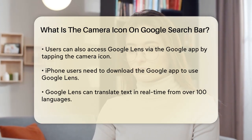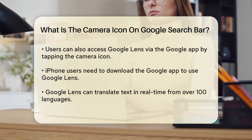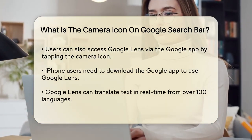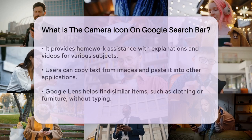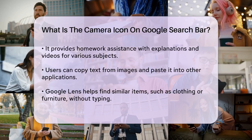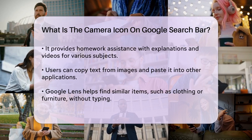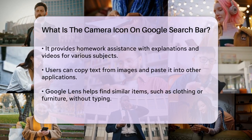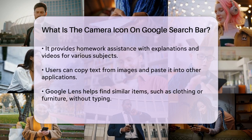For iPhone users, you need to download the Google app from the App Store. Once you've granted the necessary permissions for camera and photo access, you can use Google Lens in a similar way. Tap the camera icon at the end of the search field, point your camera at the item, and tap the magnifying glass to search.